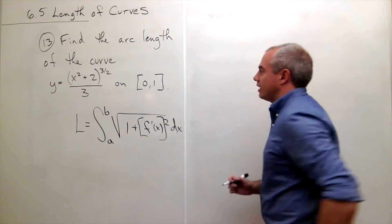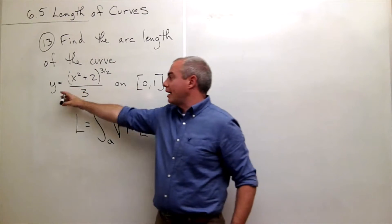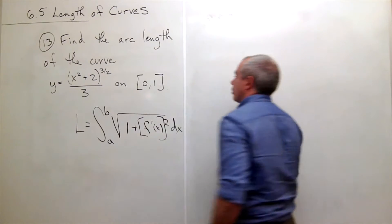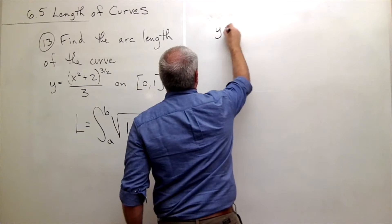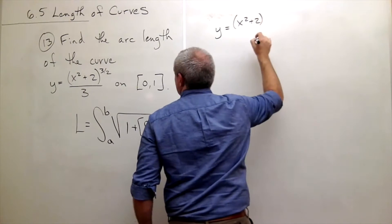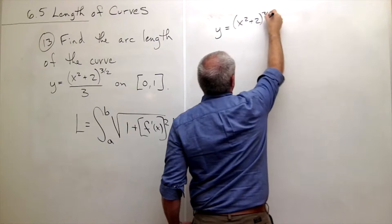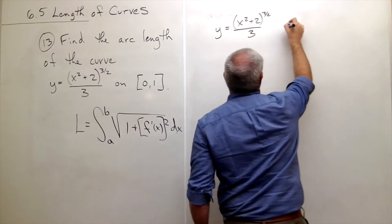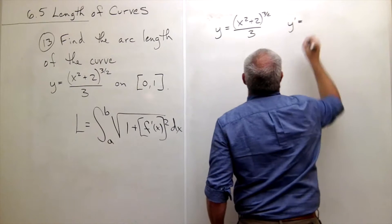So the first thing we need to know is if we know our function y, what is y prime? What's the derivative of our function? So we know that y is equal to x squared plus 2 to the 3 over 2 over 3.